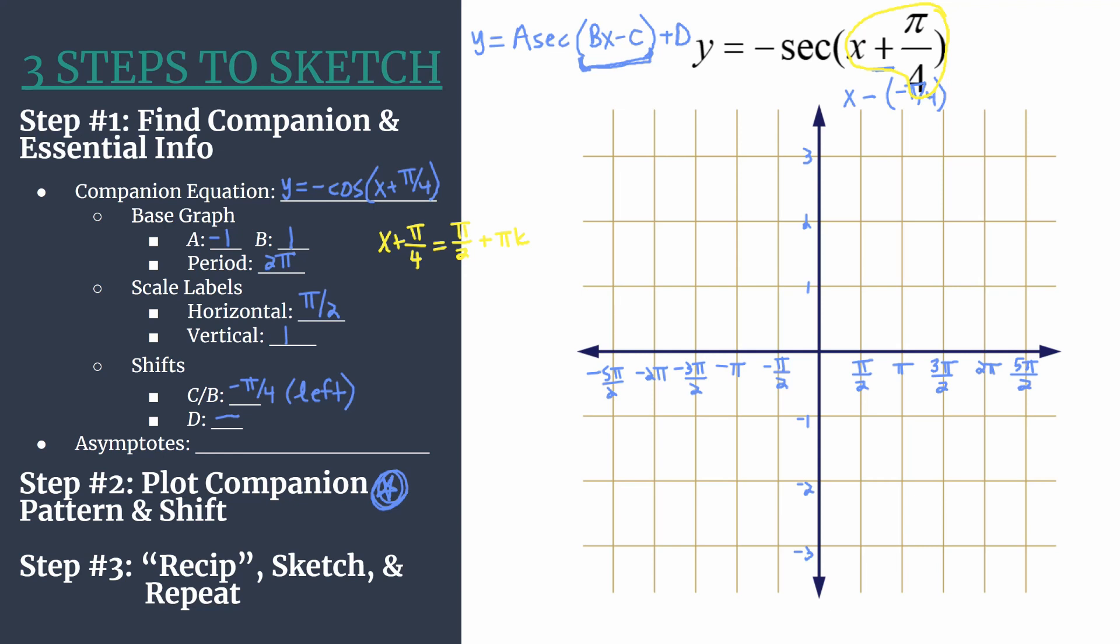And that'll give you the asymptotes equation for your particular equation. So once you have this set up, all you need to do is solve for x. That means subtracting pi over 4 from both sides. Noting that pi over 4, or that minus pi over 4, is only a like term with the pi over 2 on the right side. That pi k is its own type of term. So we don't have to worry about anything there.